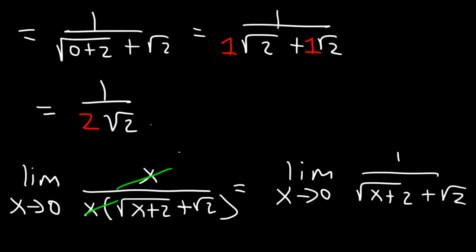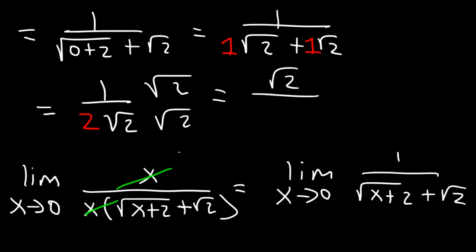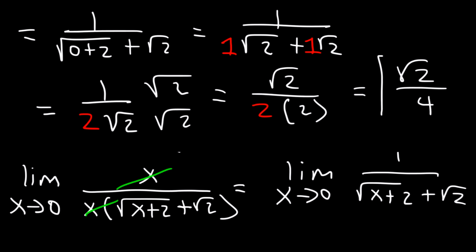That's your final answer, but you could rationalize it if you want to. So let's multiply the top and the bottom by root 2. The square root of 2 times the square root of 2 is 2, and 2 times 2 is 4. So the rationalized final answer is root 2 divided by 4.